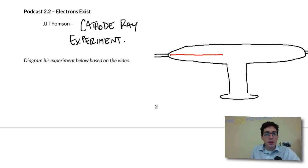Then what he was doing is he was manipulating that beam using magnets. So if we had a positive magnet on top, or the positive pull of a magnet, and the negative pull of a magnet on the bottom, he watched how this beam reacted to that magnetism.